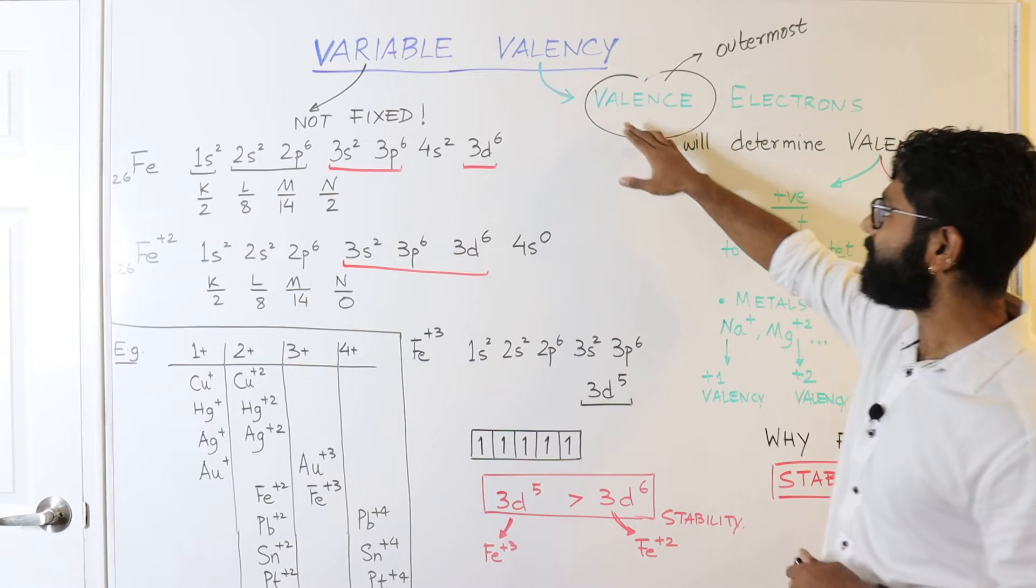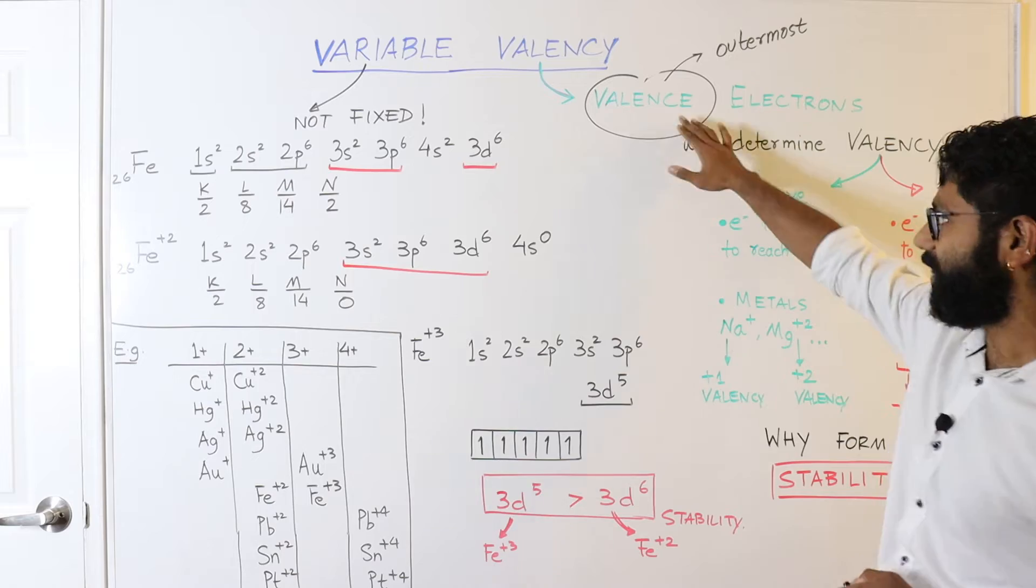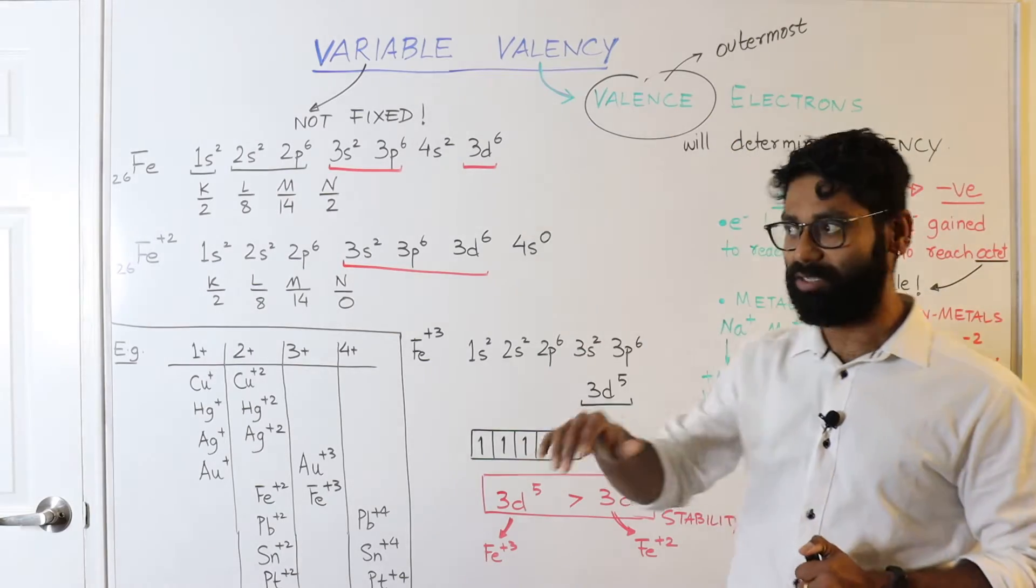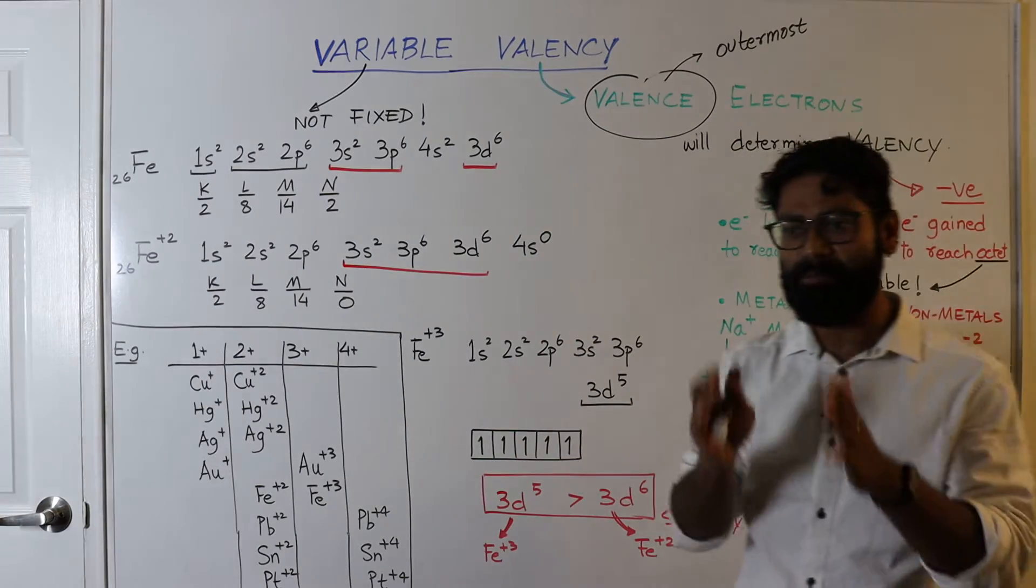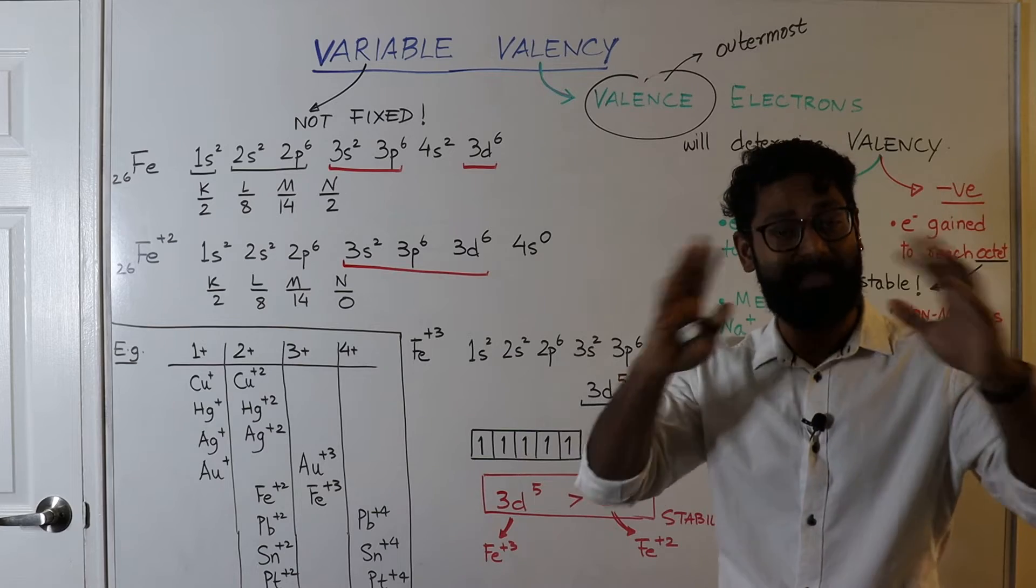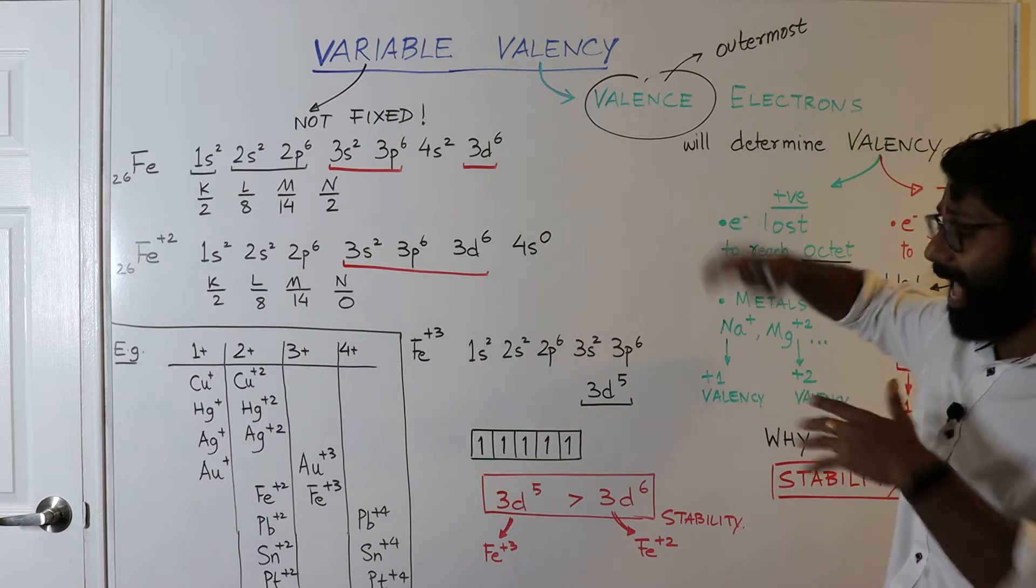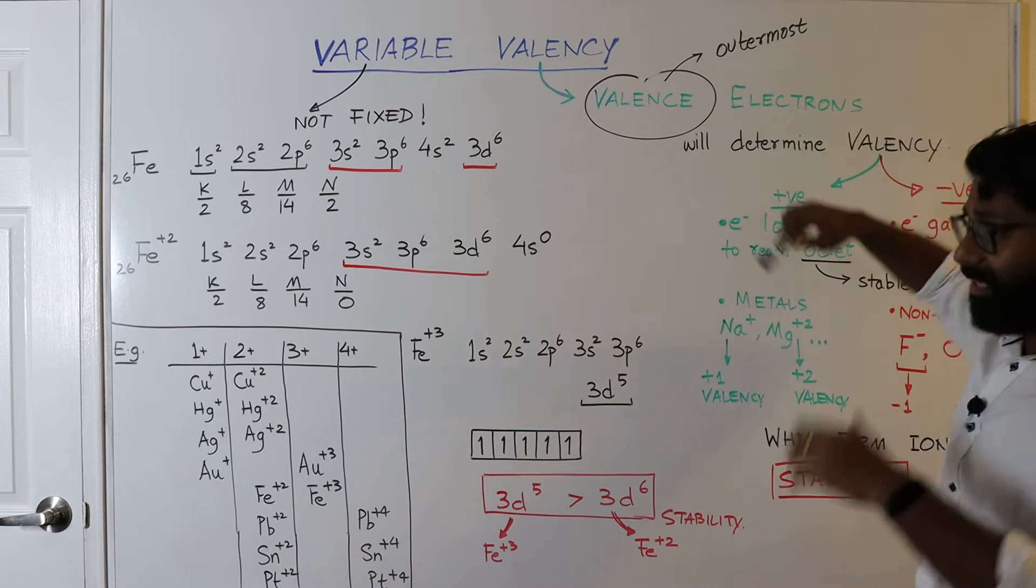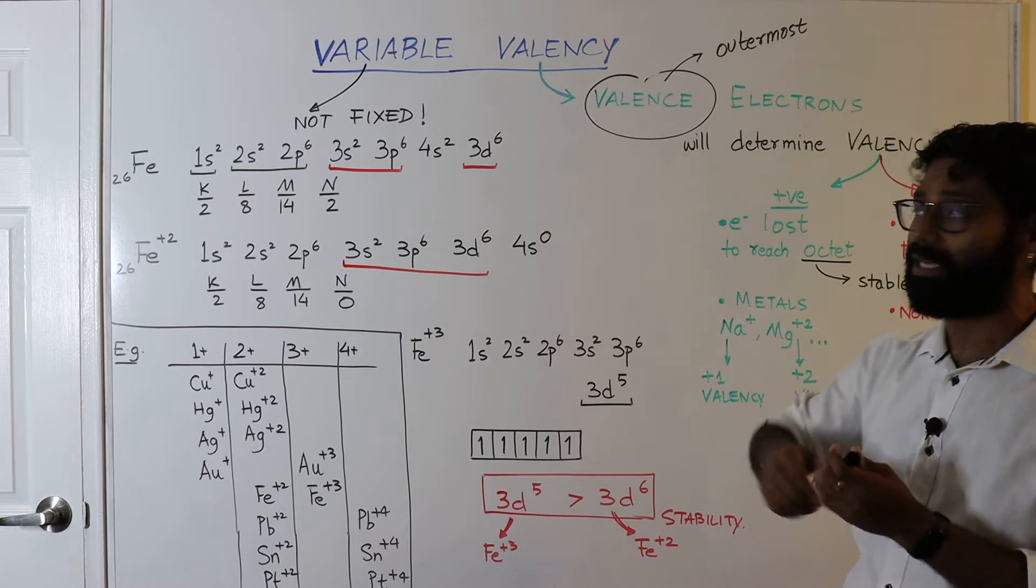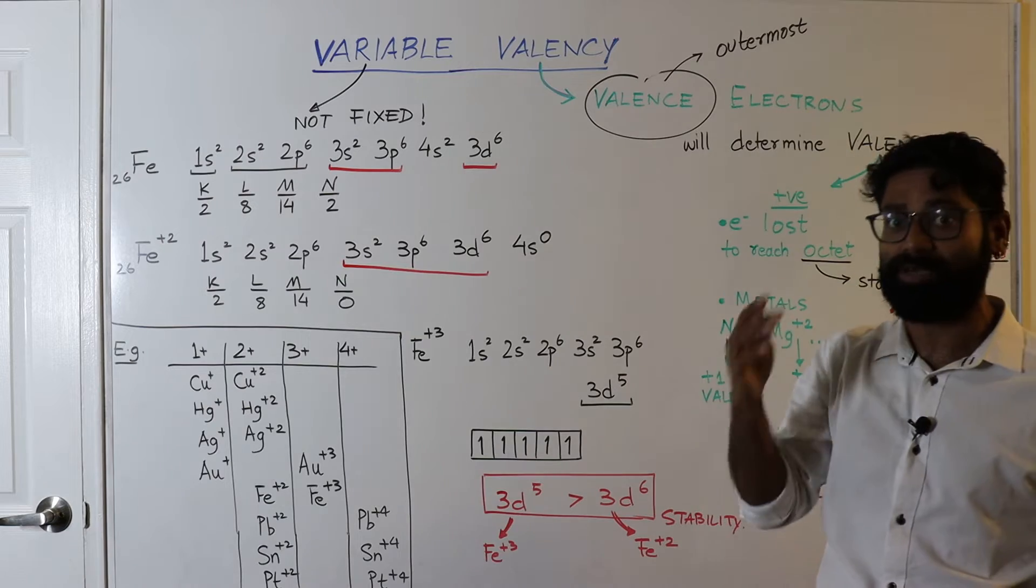As the name suggests, valency comes from valence electrons. Valence means the outermost electrons. As we know in chemistry, one of the major things that controls and explains most of the concepts is the electronic configuration. And in that electronic configuration, the valence electrons play a very important role.